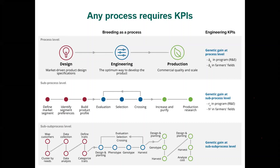Here is where genetic gain shows up as a high-level KPI to monitor the process as a whole. The compendium of all tasks and decisions that the breeding program does can be reflected in the genetic gain. On the other hand, you could develop other KPIs for specific sub-processes — for example, the repeatability of trials could be used as a KPI to monitor the effectiveness of the evaluation sub-process. You can always develop additional KPIs for more detailed processes.